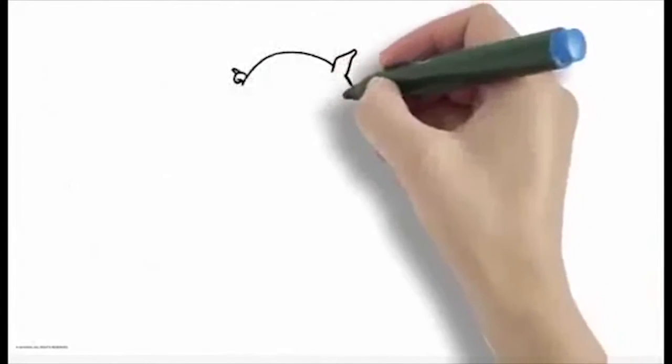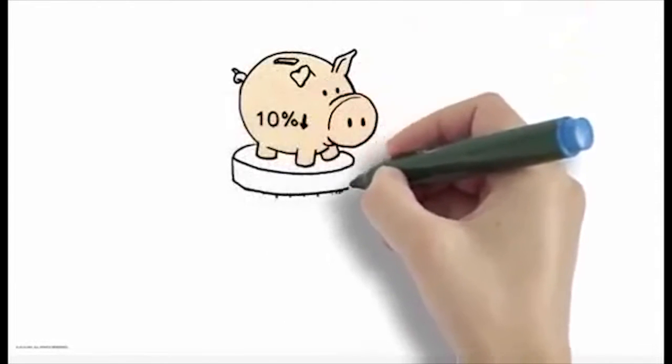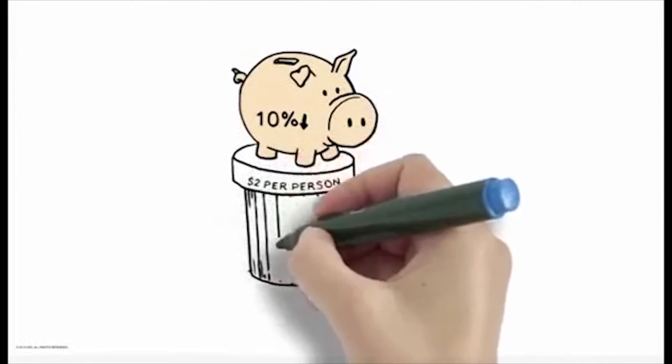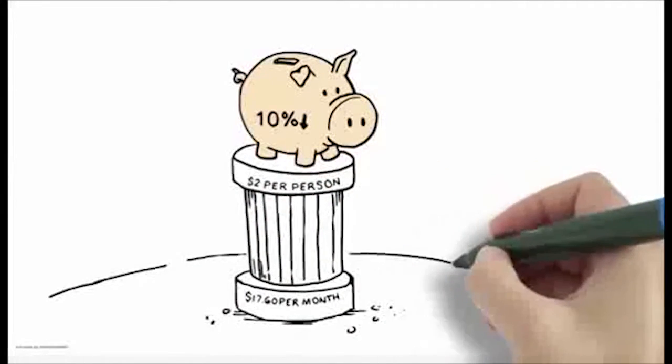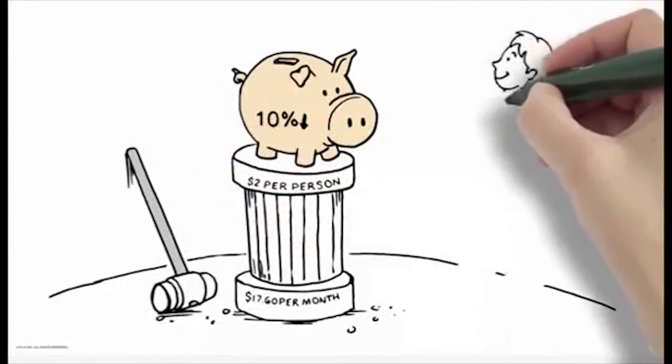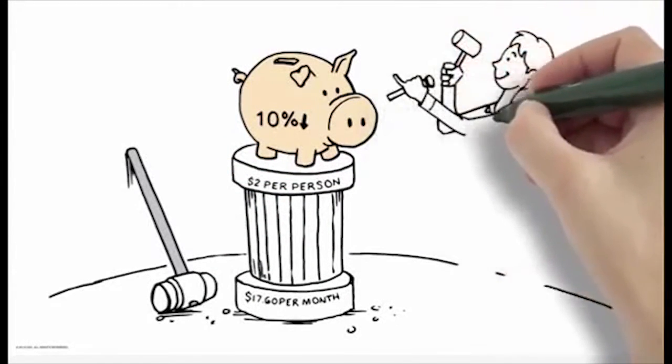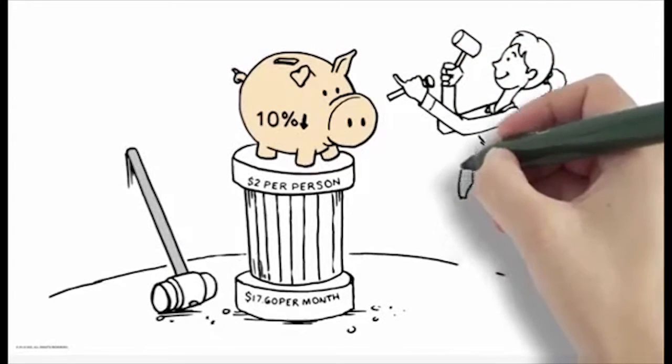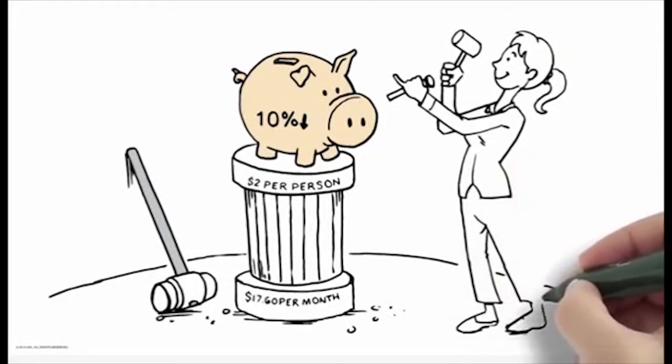So reducing total spending for this cohort by 10% would generate savings of $2 per person per month. The administrative expenses for a typical ACO, excluding claims processing and marketing, average $17.60 per person per month. So it's hard to justify traditional gatekeeper utilization review infrastructure costs for over half of the population.